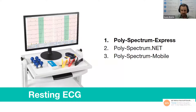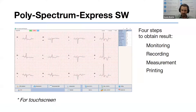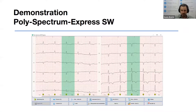You can use the Polyspectrum 8 EX main unit with three types of software, whose names you can see on this slide. You can use Polyspectrum for the full workflow from wiring the ECG up to obtaining the report. The interface is adapted for touch screen use.